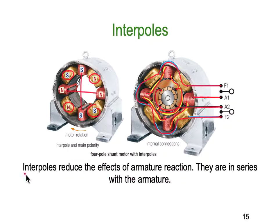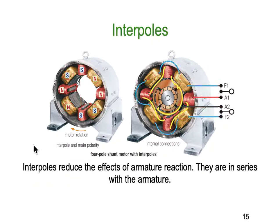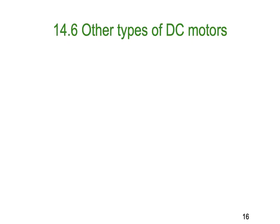So two ways we can reduce armature reaction: we can put in interpoles, and we can move the brushes a few degrees left or right to help. Putting in interpoles not only reduces armature reaction, it also gives you a much smoother mechanical output from your DC motor. That brings us to the end of control and operation of basic DC machines. We're now in section 14.6 — other types of DC motors.